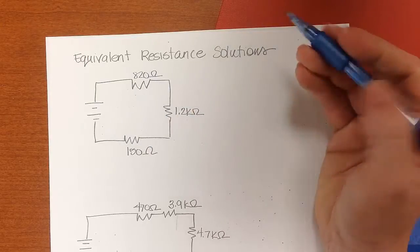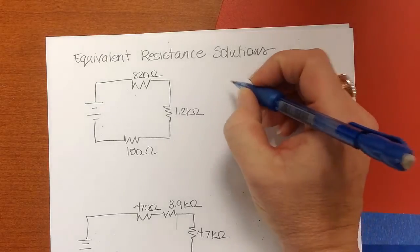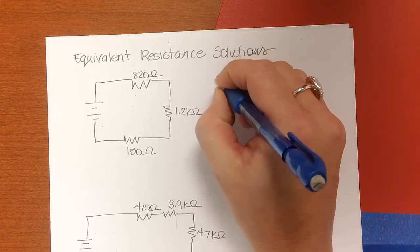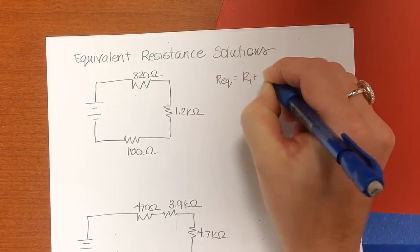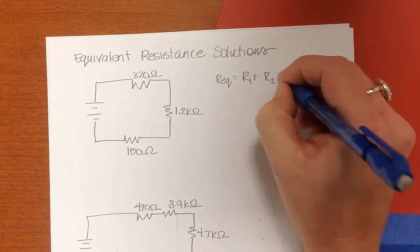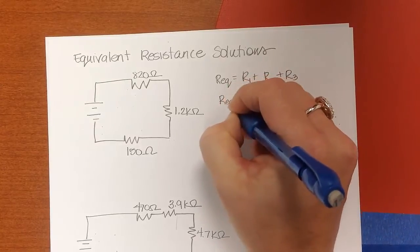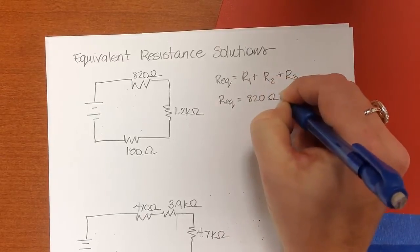So that's a series circuit. To determine the equivalent resistance for this circuit, since they're all in series, we use the formula R1 plus R2 plus R3.